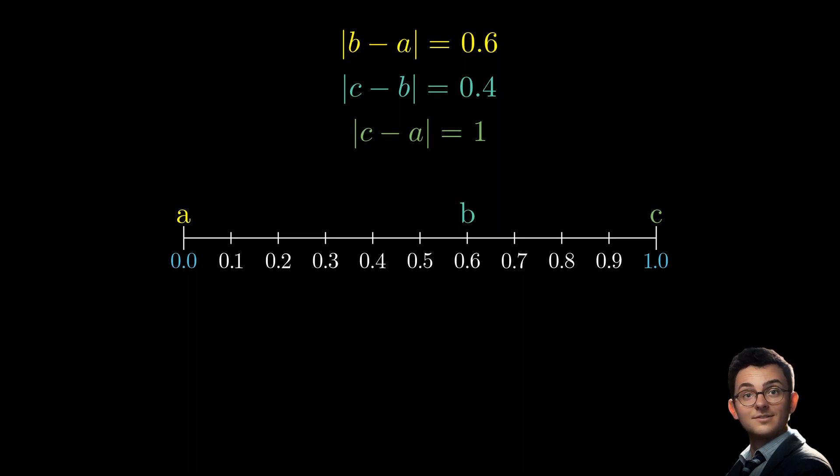These observations encourage us to use the pigeonhole principle, but then what will be our squares and circles? This is often the most critical point in applying the pigeonhole principle. As we have three numbers a, b, and c to place, we will divide our interval into two intervals: from 0 to 0.5, and from 0.5 to 1.